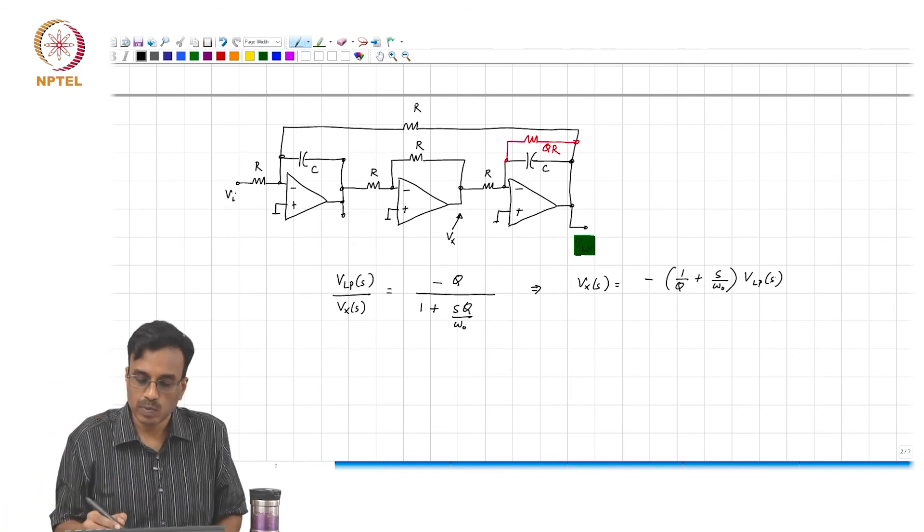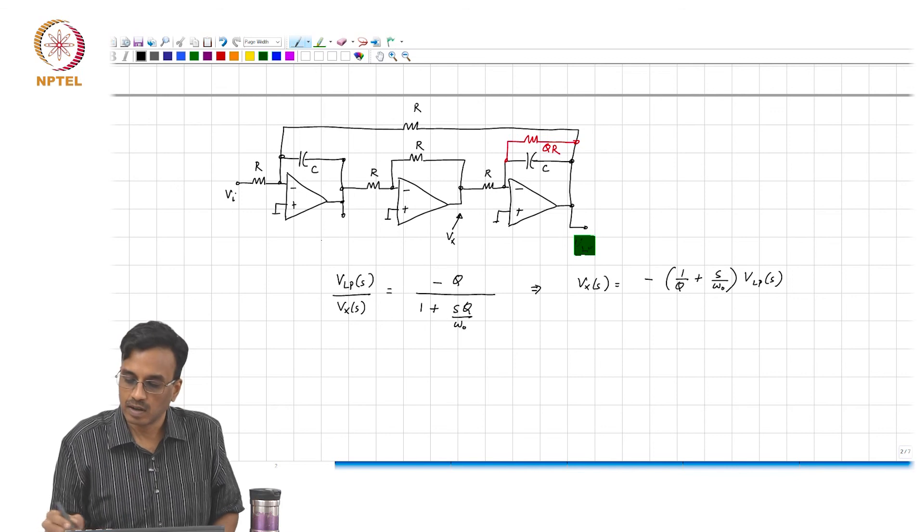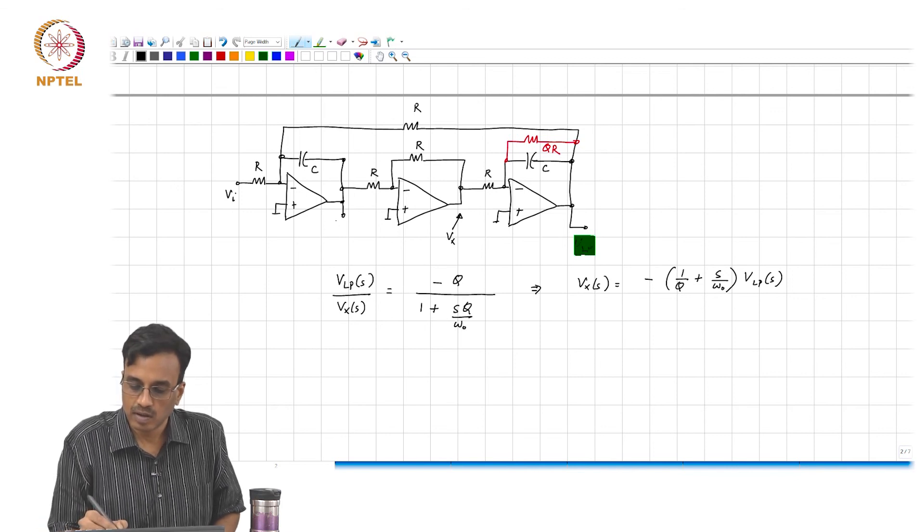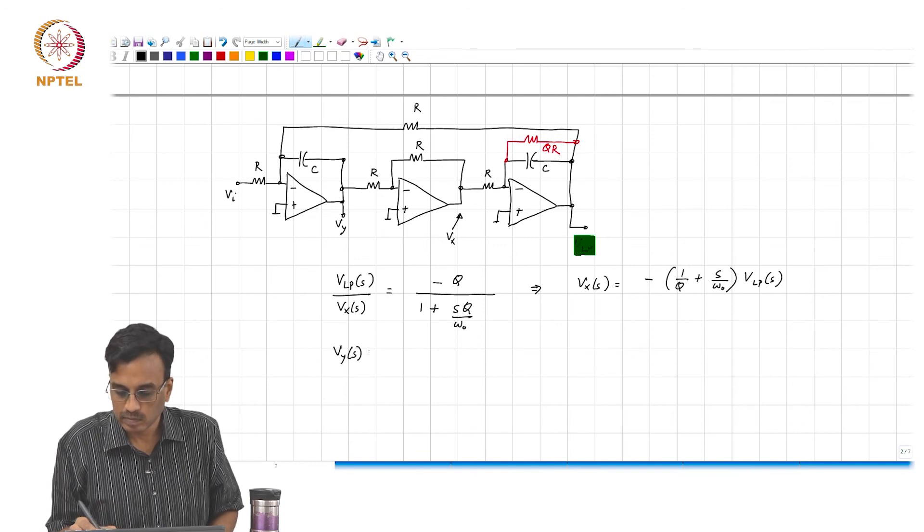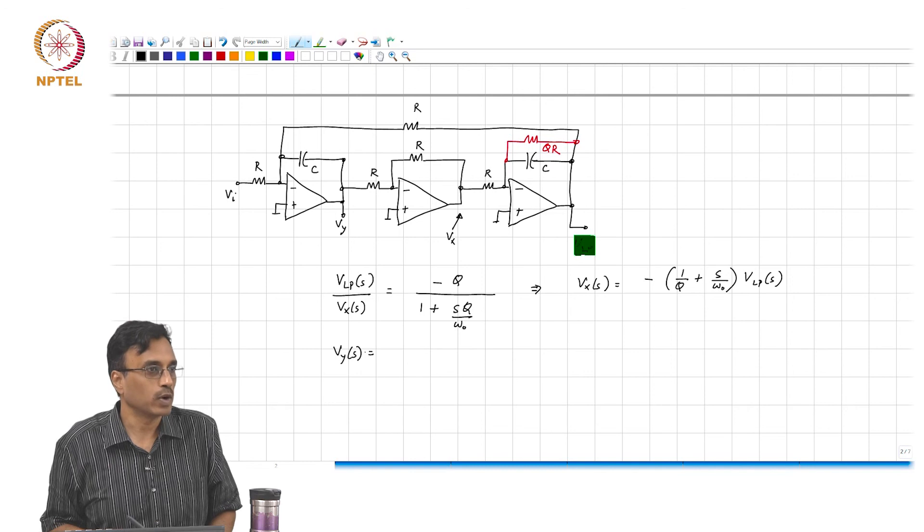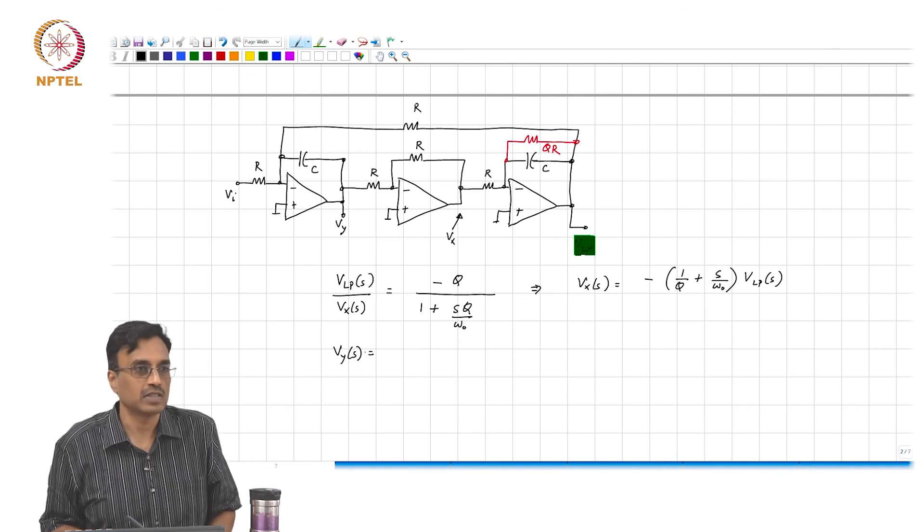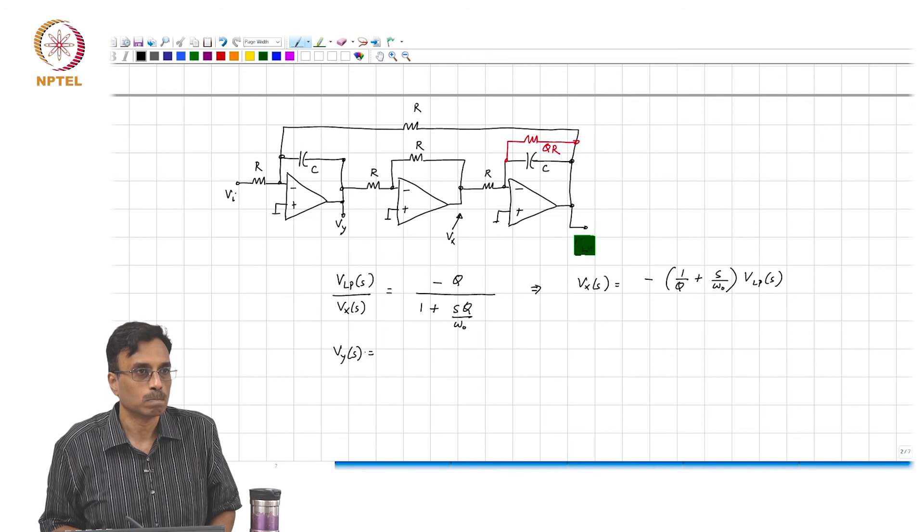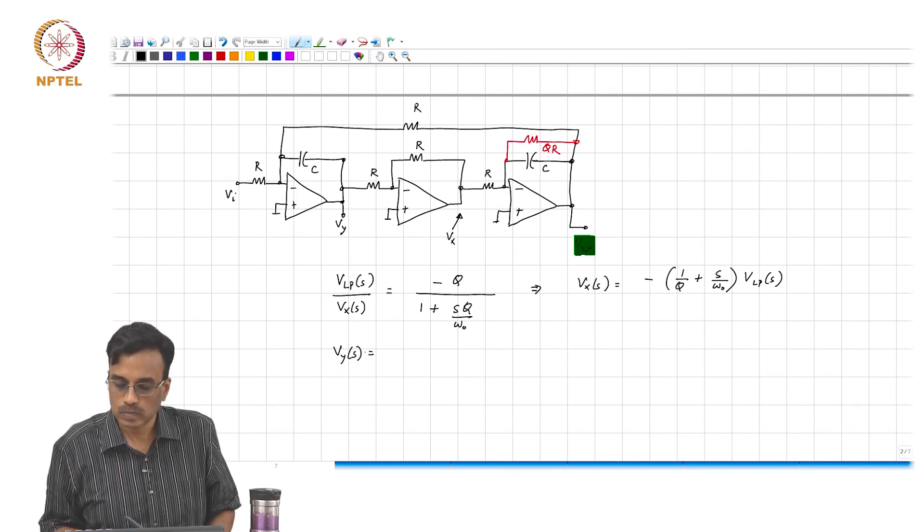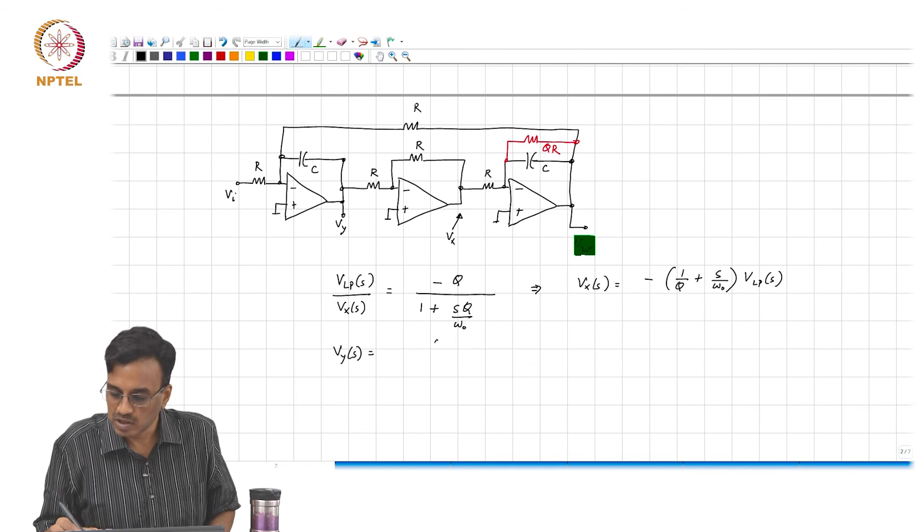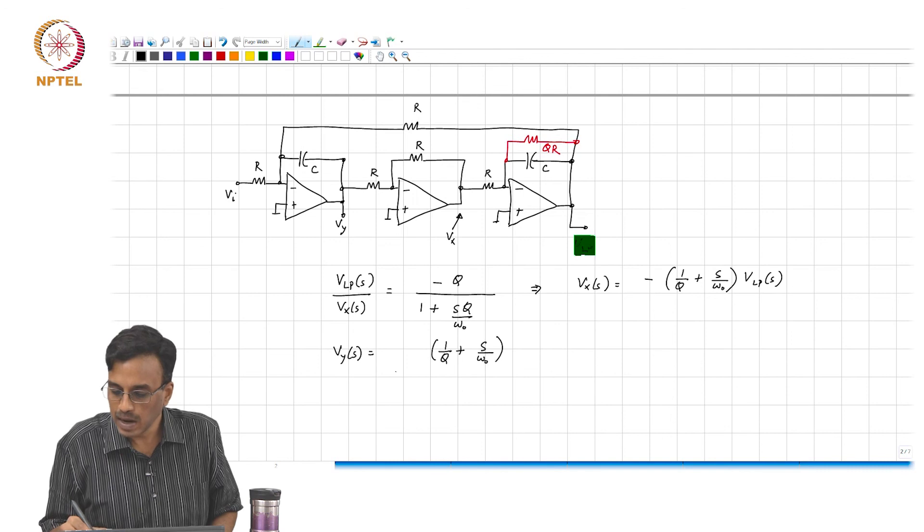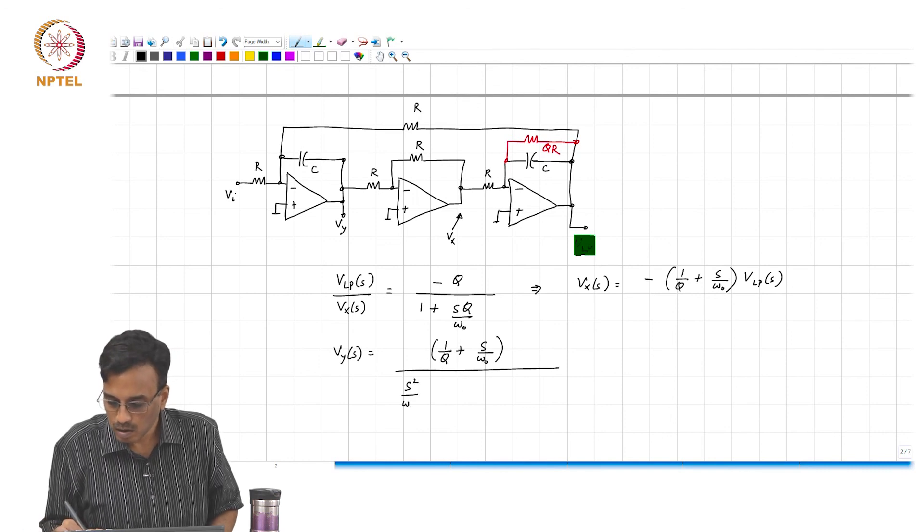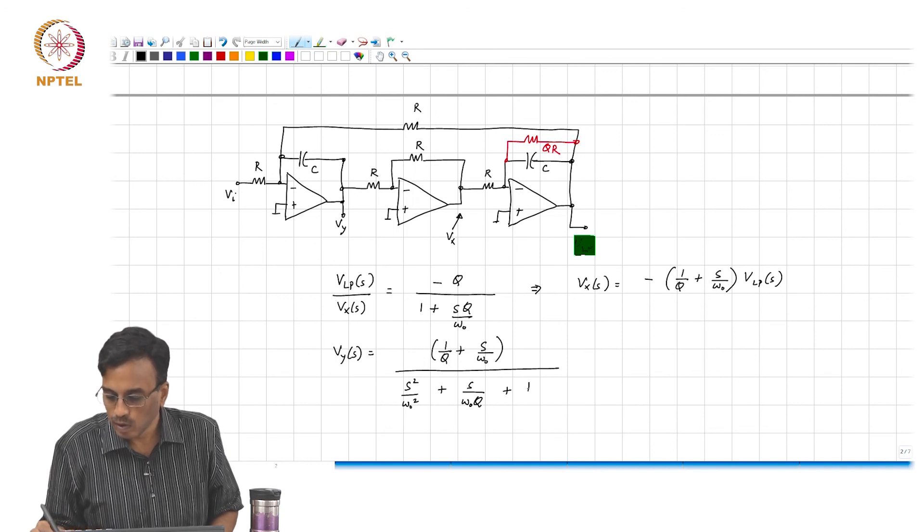Which means, what is the transfer function corresponding to Vy, the output of the first integrator? Plus Vx, which is nothing but 1 by Q plus S by omega naught divided by S square by omega naught square plus S upon omega naught Q plus 1.